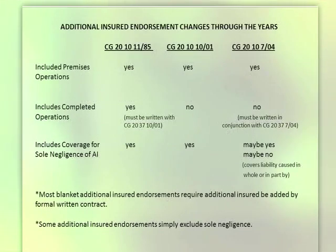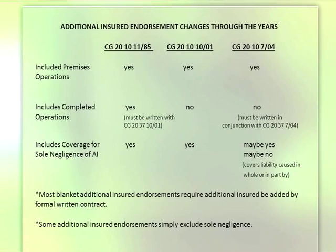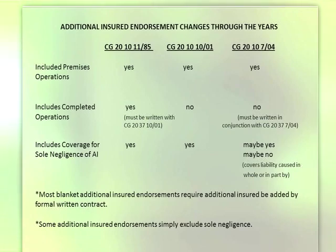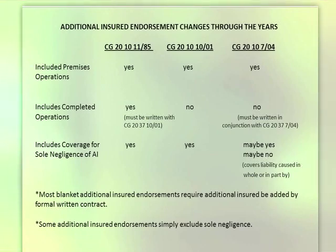It's imperative to understand what you are getting from that subcontractor when he is providing you an additional insured endorsement. Additional insured endorsements over the last 15 to 20 years have undergone numerous changes. The first one, commonly referenced in many construction contracts, is the CG 2010-1185 endorsement. That provided coverage for premises and operations, completed operations, and included coverage for the sole negligence of the additional insured.